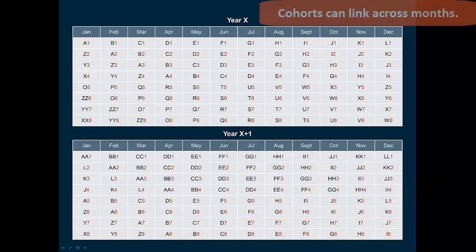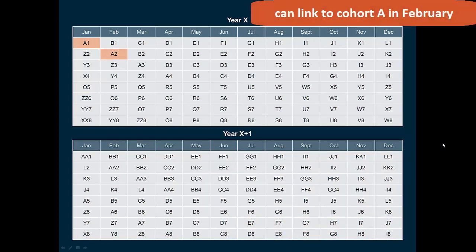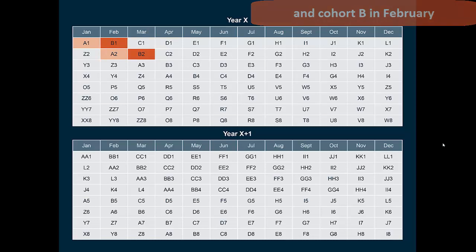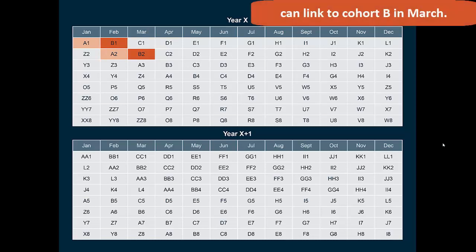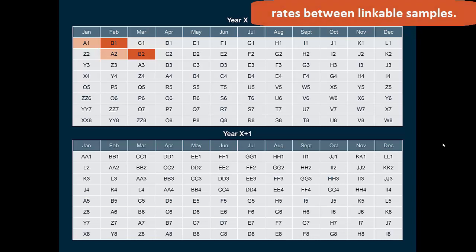Cohorts can link across months. As you can see, Cohort A from January can link to Cohort A in February, and Cohort B in February can link to Cohort B in March. However, the panel rotation pattern has important implications for which months are linkable and linkage rates between linkable samples.